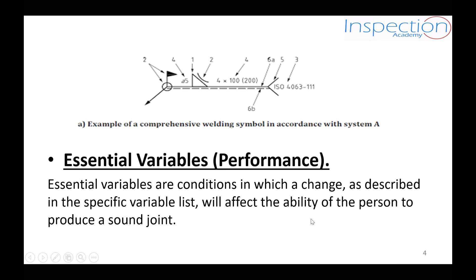Essential variables can sometimes be related to the base metal or the filler metal. For example, according to the ISO code, a welder who can weld a steel joint may not be able to weld an aluminium joint. For the filler metal, some welders can use a specific kind of electrode — and we will explain this in detail later in our course — but this is considered an essential variable. If we change it, this will affect the welding joint and will require re-qualification for the new variable. Thank you for listening and have a good day.